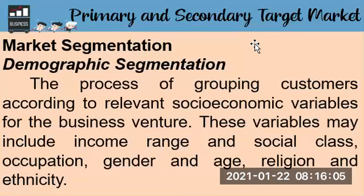Gender and age group are data that must be collected because the life cycle of customers and their gender influence their buying behavior. Sometimes it is easier to entice teenagers than older individuals, so we have to identify the age group distribution in a certain community. Religion and ethnicity should also be taken into account because they affect the way customers buy products or avail of services — including food choices, holiday traditions and beliefs, spending habits, and conservativeness.